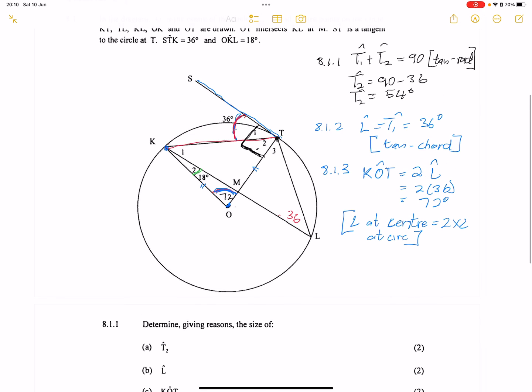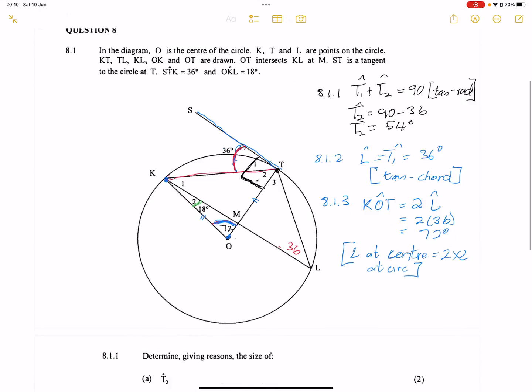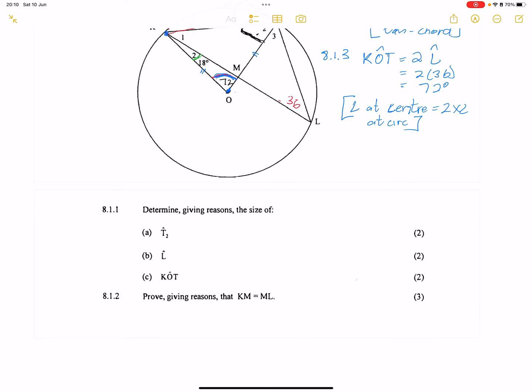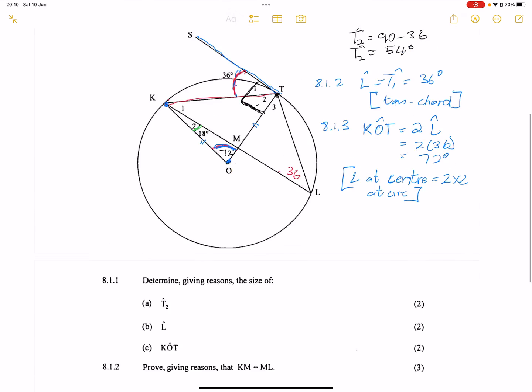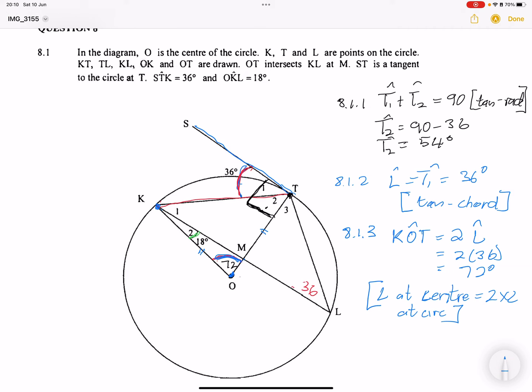So in this case, the last question, they say prove giving reasons that KM is equal to ML. So we need to prove that these two lines are equal. Now remember, we can actually prove that they are equal if we can prove that the line from center is perpendicular to the chord, therefore bisects the chord. So if we can prove that this is a 90 degree angle over there, any of those angles around M, if we can prove that they are equal to 90 degrees, that will help us.